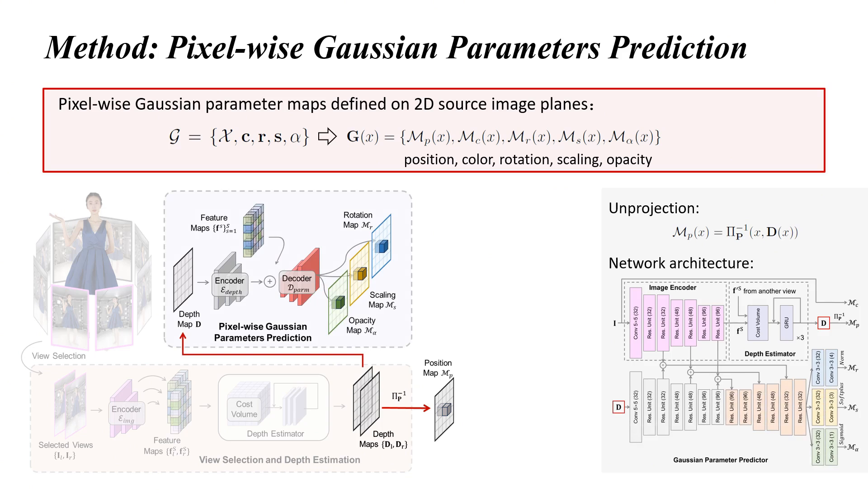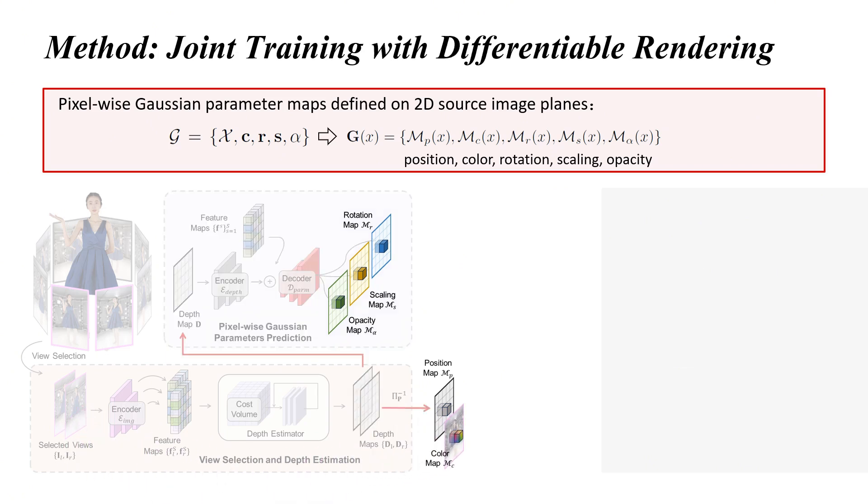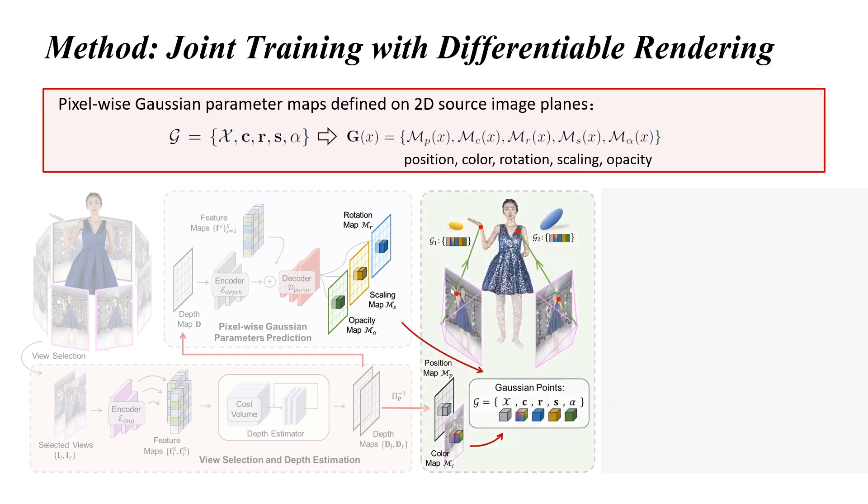Other than performing as the Gaussian position map, it also complements the geometric awareness for each pixel when combined with image features to regress the remaining Gaussian maps using a UNET-like network. Considering the appearance of humans is dominated by diffuse reflection, we directly use the source RGB image as the color map. Once all parameter maps are determined, Gaussians located at foreground pixels of both source views are unprojected to 3D space and aggregated for novel view rendering.